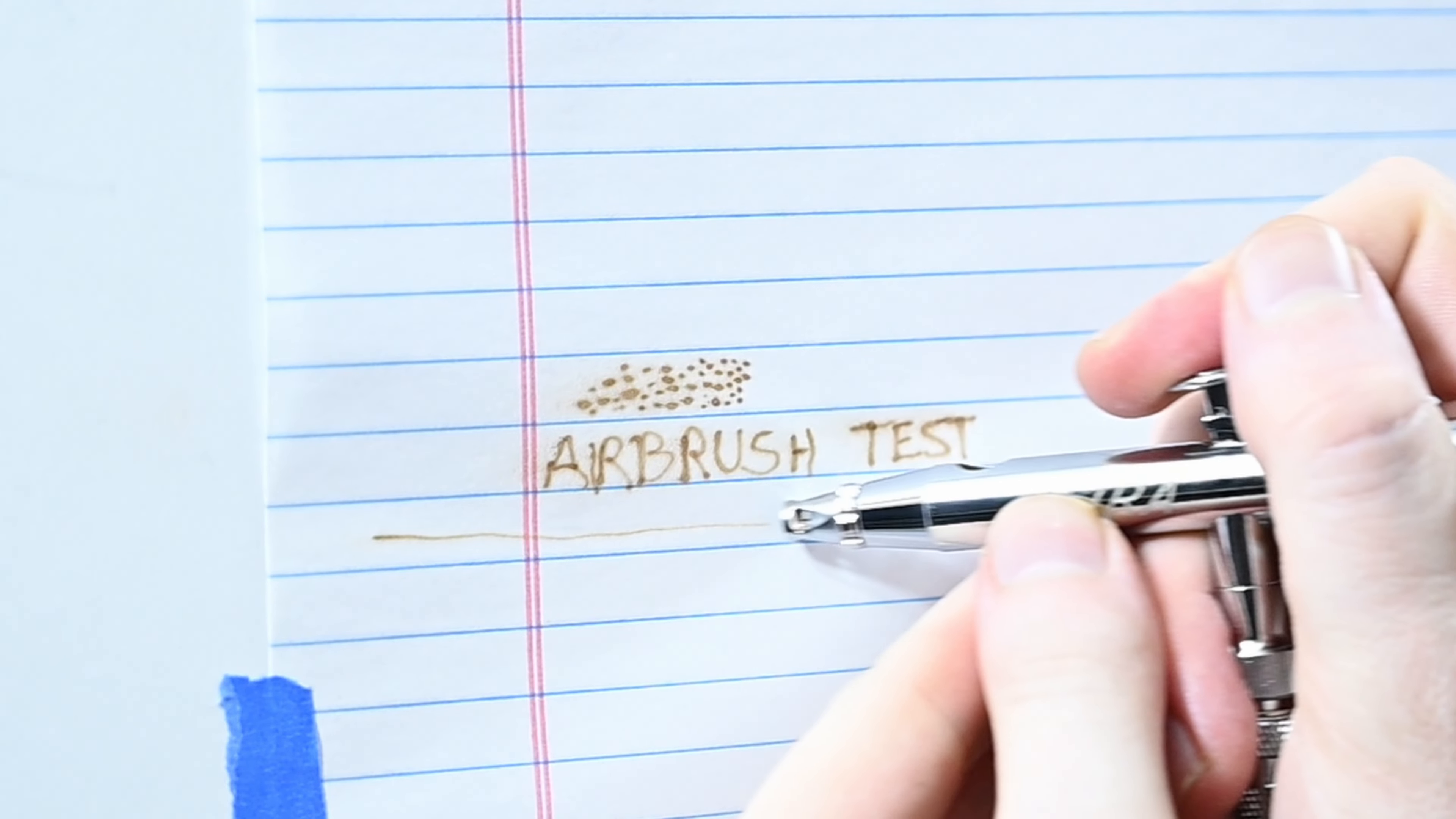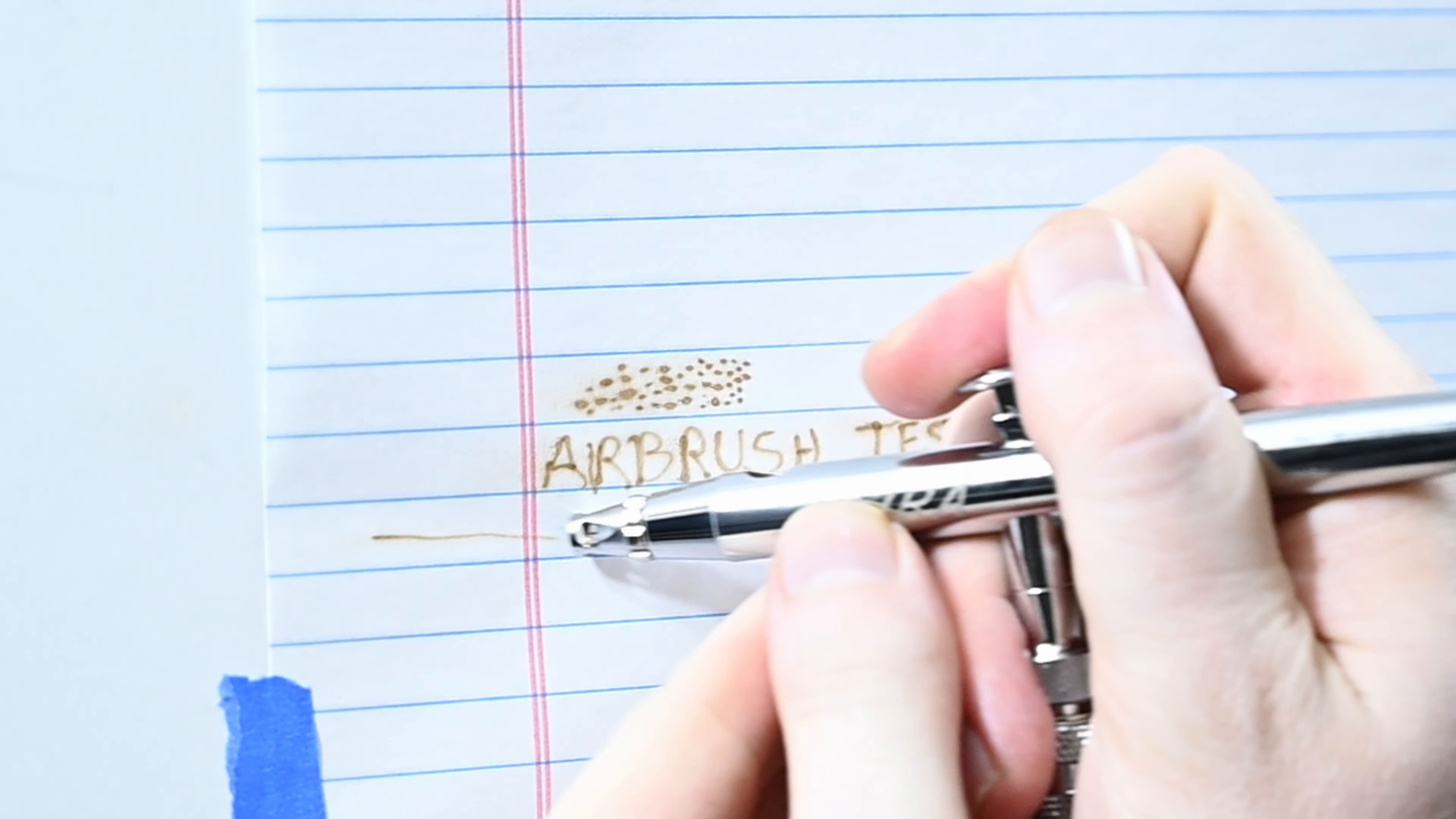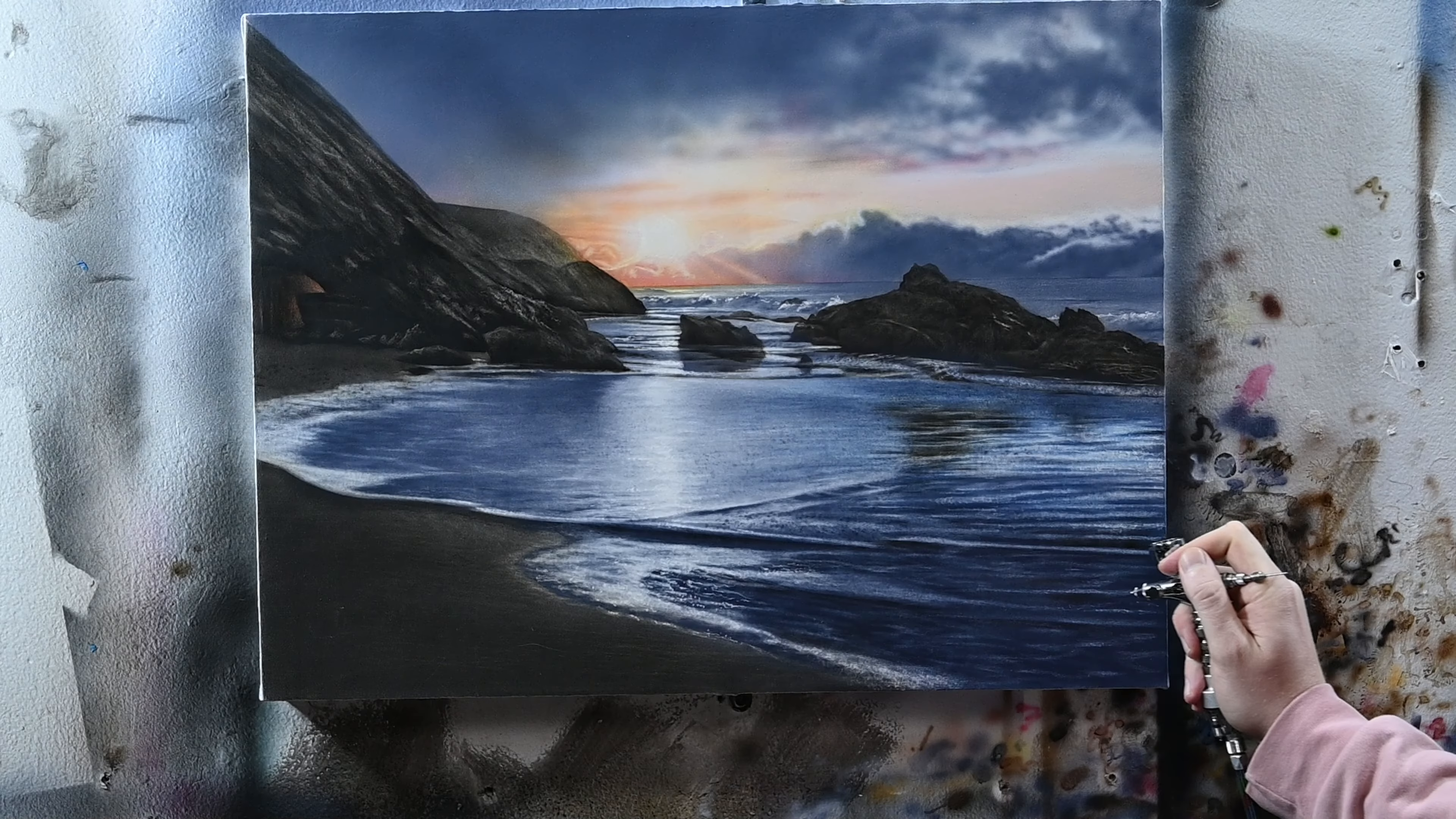And for painting fine lines, this airbrush is excellent. To paint a fine line with any airbrush, it's just about reducing your paint, dropping your PSI, and most importantly, holding it very close to the surface that you're painting. And with the Ultra, I'm able to paint a line about as thin as a human hair.